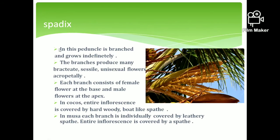The next one is spadix inflorescence. The spadix inflorescence has a branched peduncle, and this branching is indefinite. The flowers are arranged in an acropetal manner. The basal flowers are female and the apical flowers are male. This inflorescence is enclosed in a protective leaf-like structure called a spathe. In Musa paradisiaca (banana), it has a leathery, pinkish-colored spathe.